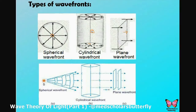For cylindrical wavefront: it is a wavefront which originates from a slit. If I have a paper lantern and I have drawn a slit here and I pass light through it, the light will pass on to the next corner of the cylinder — so that is the cylindrical wavefront.